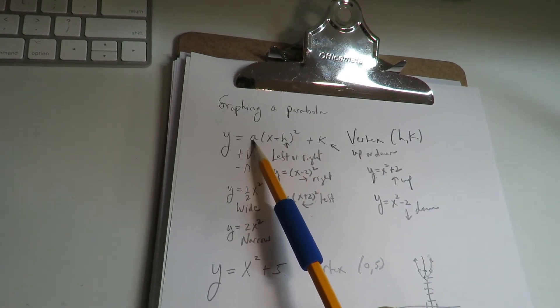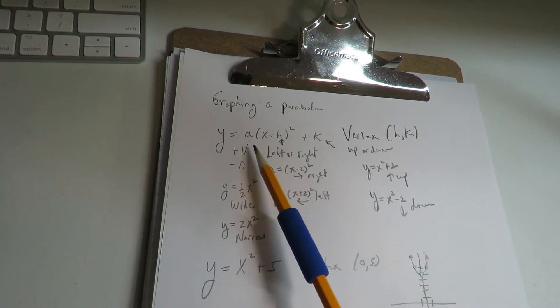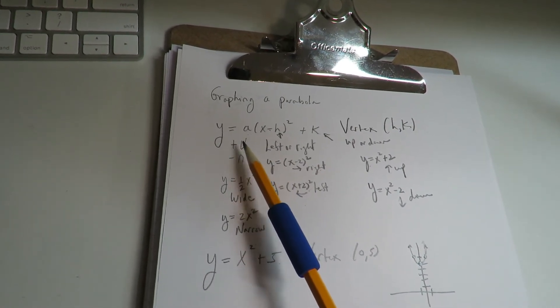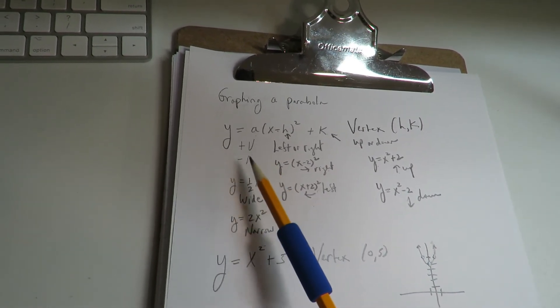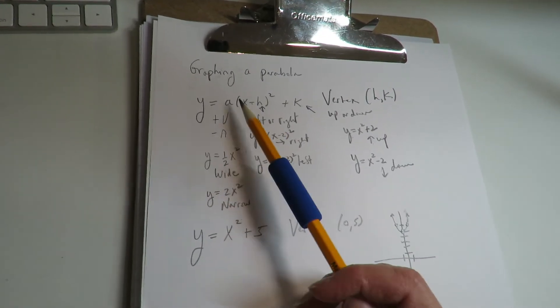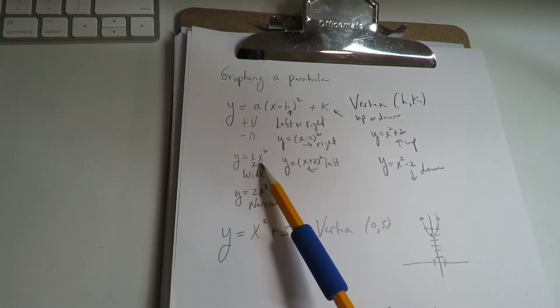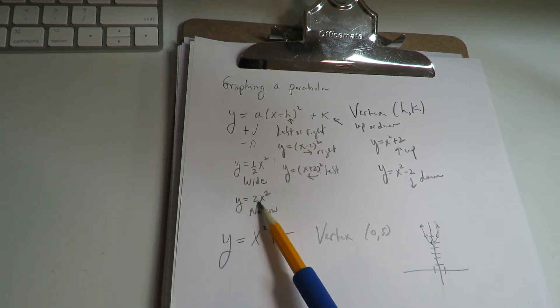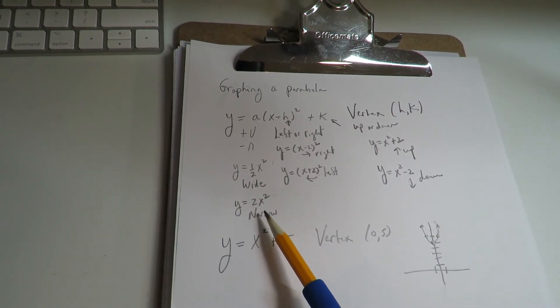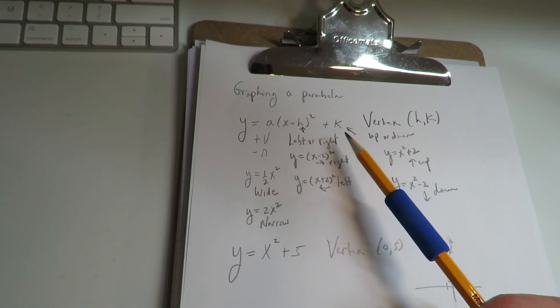The value, if there's something multiplied in front, it tells you two different things. It tells you if the parabola is face up or face down. Positive is face up, negative is face down. If the value of a is between negative 1 and 1, it's going to be wide. If the value of a is greater than 1 or less than negative 1, it's going to be narrow.